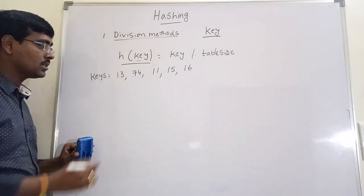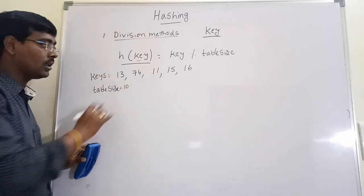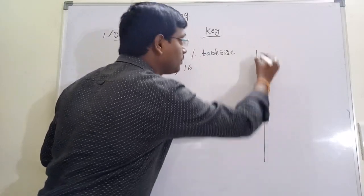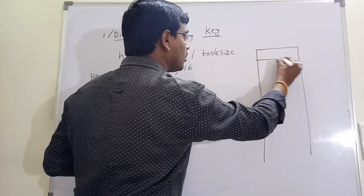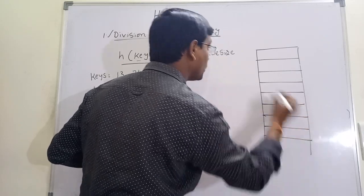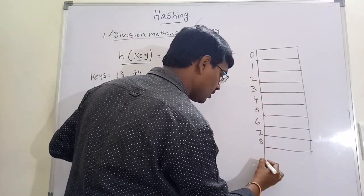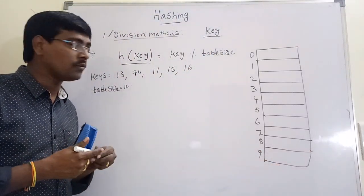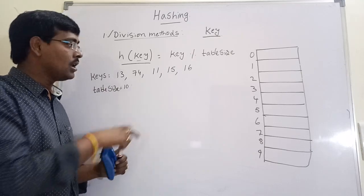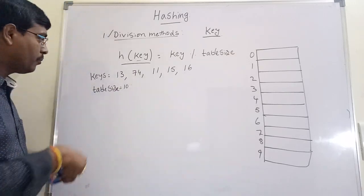Assume some keys: 13, 15, 74, 11, 15, 16. Assume table size is equal to 10. Place these keys into the hash table using the division method. The table has positions 0 through 9. Since table size is 10, performing the modulus operation always produces remainders 0 to 9.